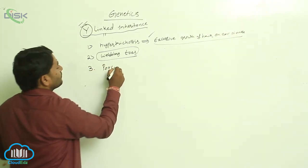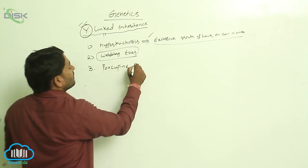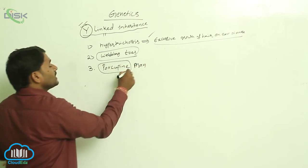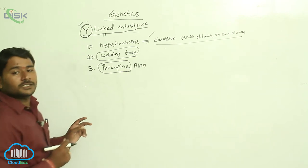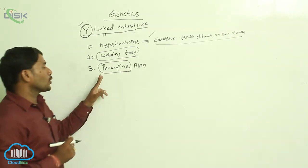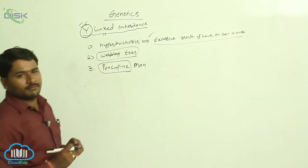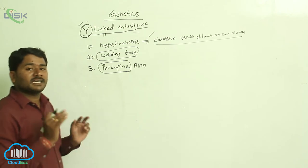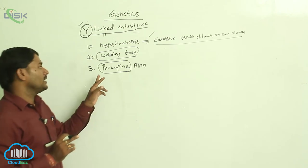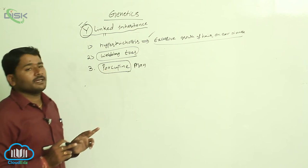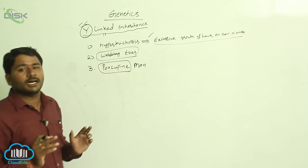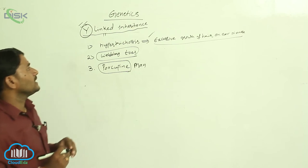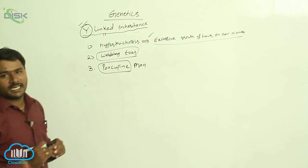The third example is porcupine man — rigid or tough hair growth on the man. Just like how a porcupine has spiny hair on its body, porcupine-like hair grows on the body of the male. These are the Y-linked inheritance characters.